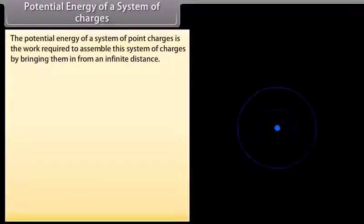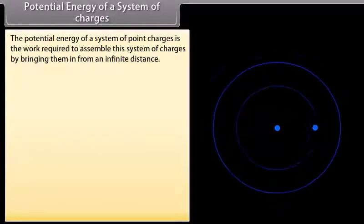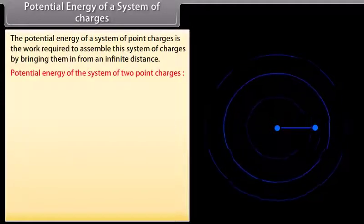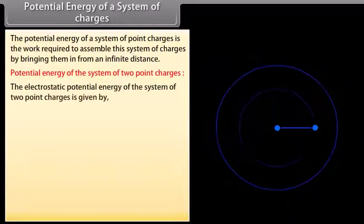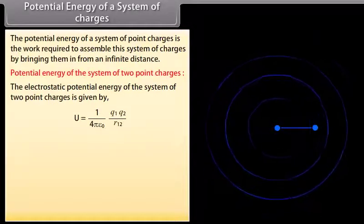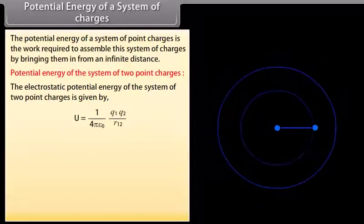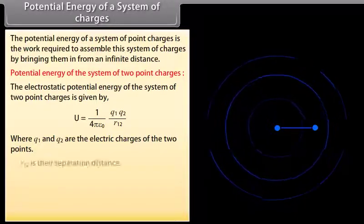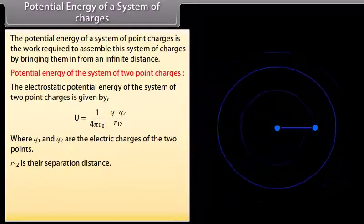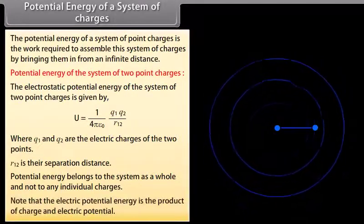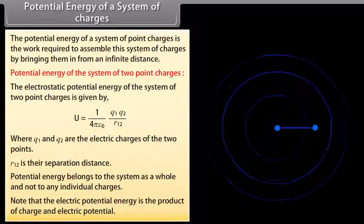The potential energy of a system of point charges is the work required to assemble the system by bringing them in from infinite distance. For two point charges, the electrostatic potential energy is U = (1/4πε₀)(Q1·Q2 / R12), where Q1 and Q2 are the charges and R12 is their separation. Potential energy belongs to the system as a whole, not to any individual charge. Note that electric potential energy equals charge times electric potential.